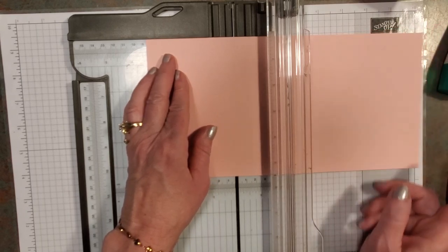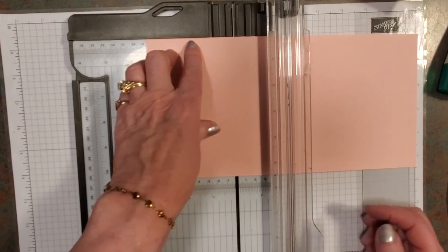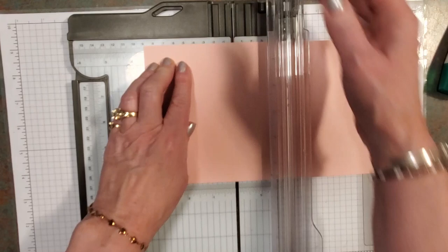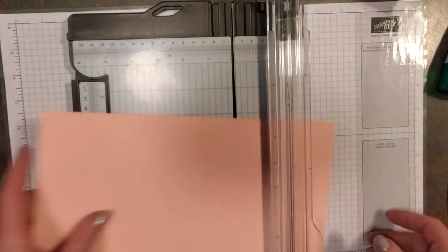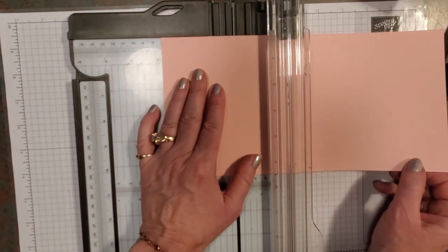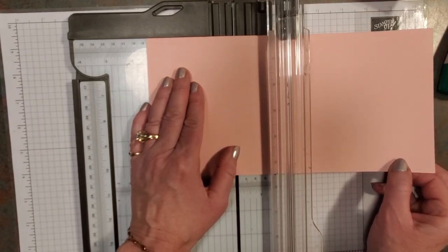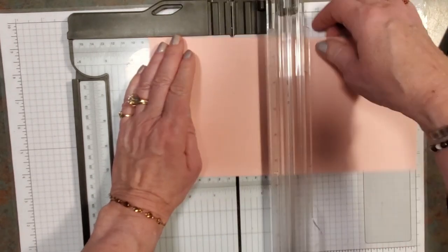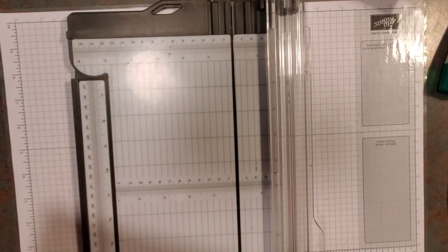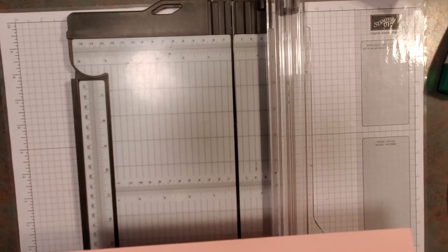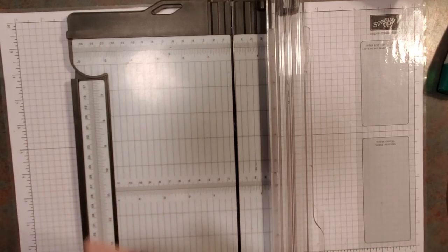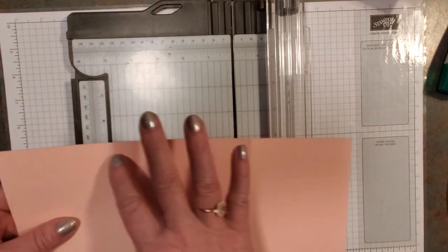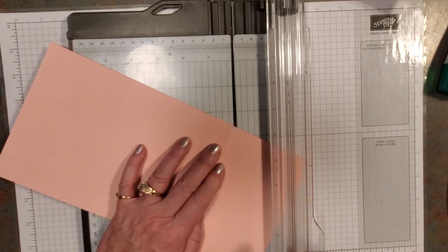You're going to take your card and get your scoring tool, and you're going to score it at 3 and 3/8ths on each end. So here's 3, and then the 8ths are the short line, tall line, short line. Use your score, not your cutter. And then turn it around and do the very same thing.